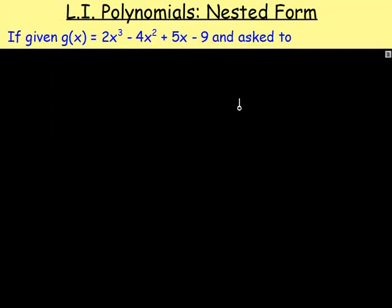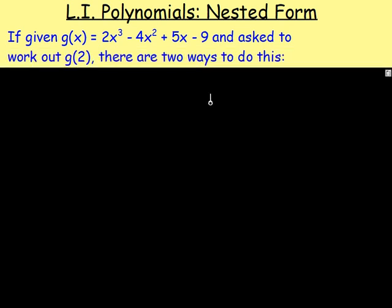Moving on to look at the nested form of polynomials. So what is that all about? Well, if I give you a function, say g of x, which equals 2x cubed minus 4x squared, add 5x, take 9, and I ask you to work out, for example, g of 2, then there are two ways to do this.